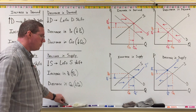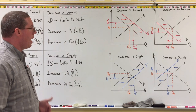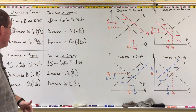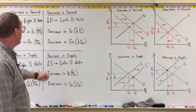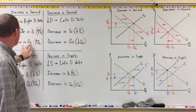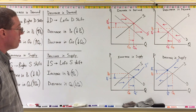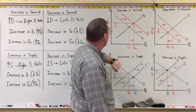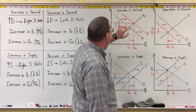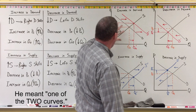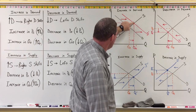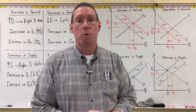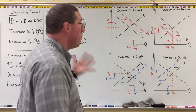Those are the four possible changes that can happen in any product market, summarizing the result on equilibrium price and equilibrium quantity for each. You don't have to memorize the chart — just know how to use the graph. Start with a supply and demand curve, know where the intersection is, move one of the curves right or left, and see where the new intersection point is. That's it for market dynamics.